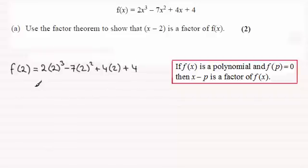And what we've got then is 2 times 2 cubed, that's 16. And here you've got 7 times 4, which is minus 28 there. And then 4 times 2 is 8, and plus the 4. And what we get is indeed 0.